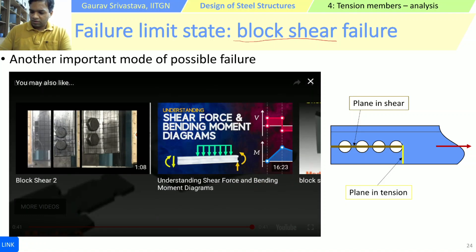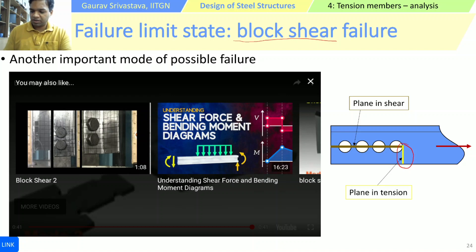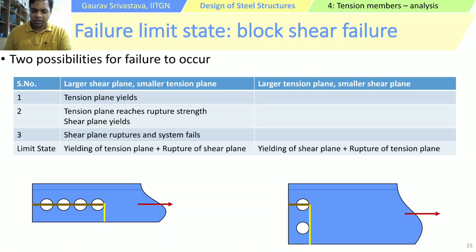This is basically a combined type of failure mode where certain portion of the member is failing in shear and certain portion of the member is failing in direct tension. The portion which can fail in direct tension has to be considered from that perspective and the other portion which usually fails in direct shear has to be considered from that perspective. For this failure mode to happen there are two possibilities — let us consider the sequence of events in one of them.